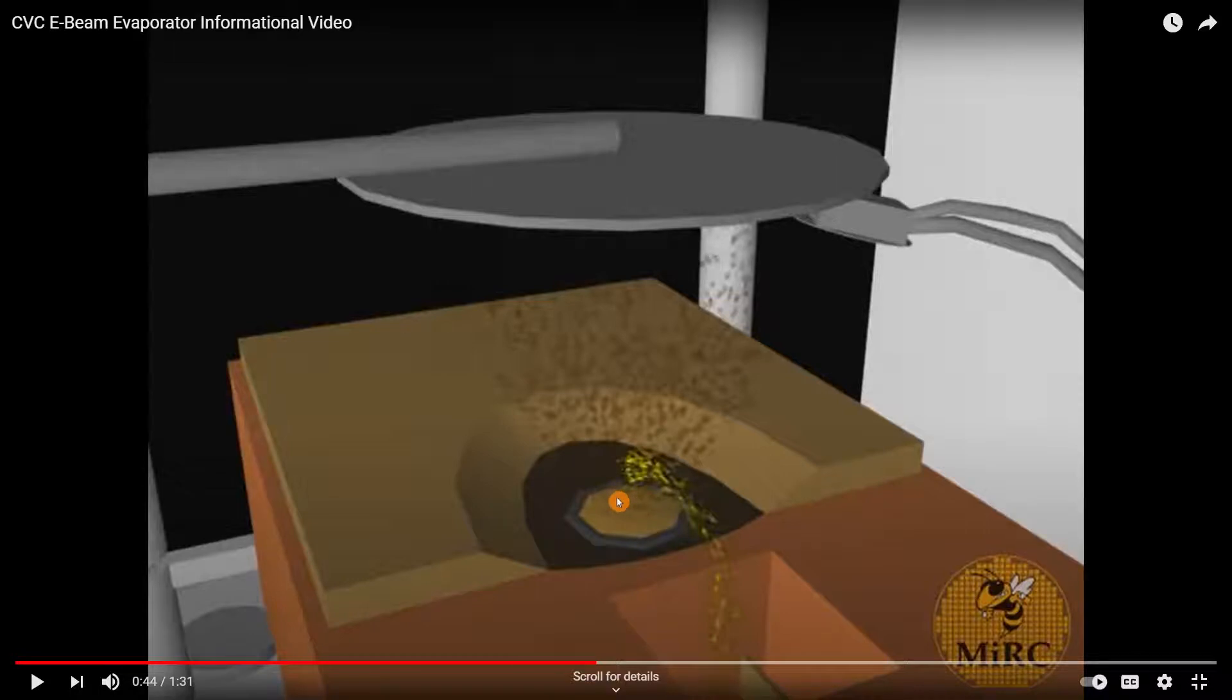And the source material, under the heat, becomes vapor and condenses, going up to the substrate and becoming the film.